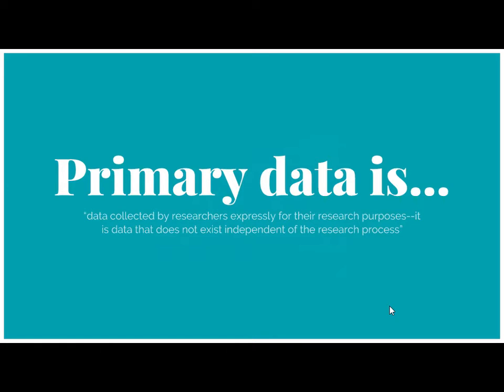Last week we read about existing data, meaning data that's in files or archives that already exists before you begin your research. For this week we move on to primary data, which is data that the researcher himself or herself collects. Primary data would not exist if not for your efforts as a researcher. That's the main distinction to keep in mind between primary and existing data.